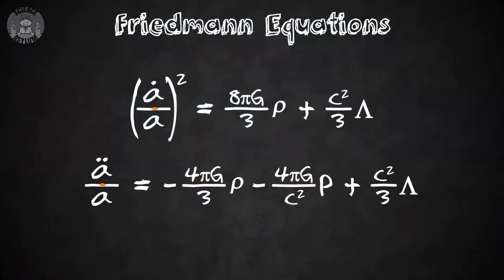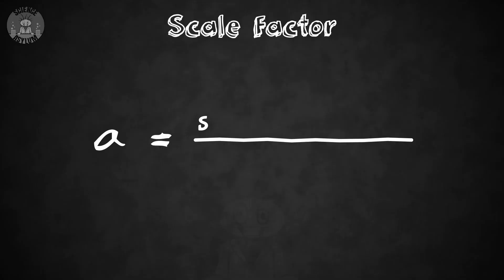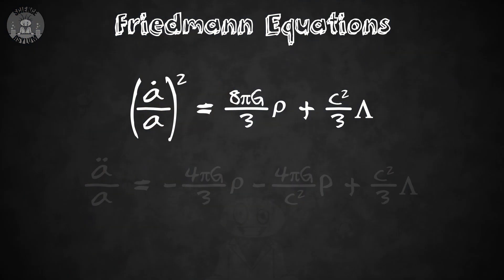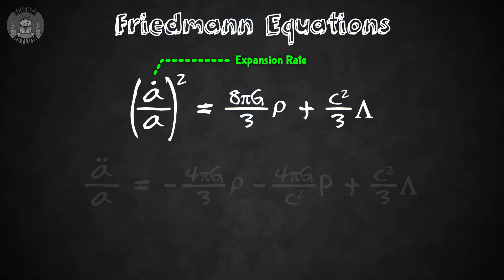Now that we have all this information, we can go back and see what the Friedman equations do. This A is something we call the scale factor — it's not acceleration, it is a ratio. It's the spacing between the superclusters at any given time in the history of the universe compared to what it is now, which is about 400 million light years. The A would have a value of exactly one right now. It allows you to scale the equation based on what point in time you're looking at — you can use this equation for any point in time.